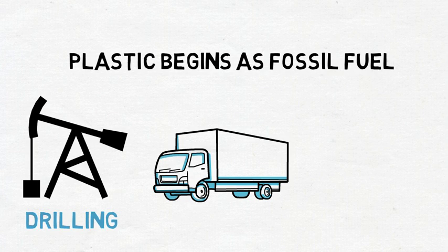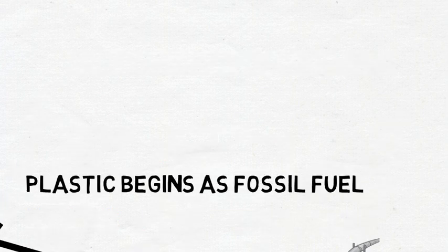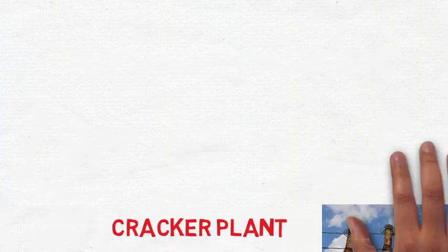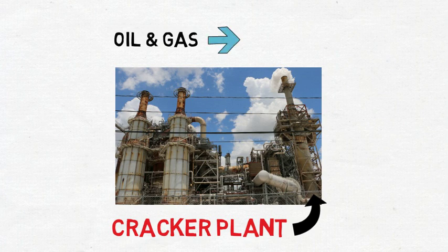Pipelines clear land and leak methane. At massive industrial facilities called cracker plants, oil and gas undergo one of the most energy intensive industrial processes to start their transformation into plastic.